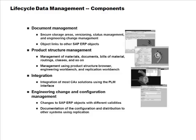Another set of features is product structure management — convenient ways to look at the bill of material and routing for a product easily. In these companies, you also make engineering changes: changes to design, specifications, routings, or BOM, and these have downstream implications. Managing those changes in a controlled way is called engineering change management.